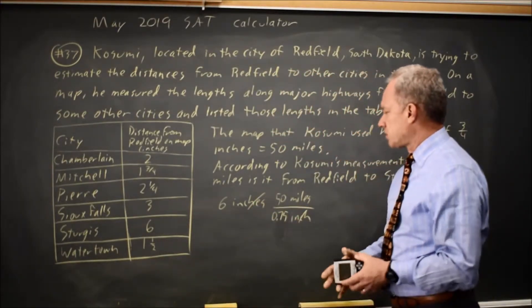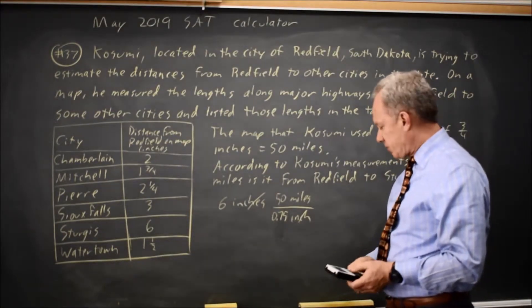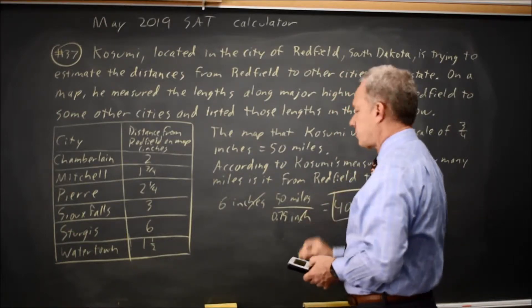And 6 times 50 is 300. 300 divided by 0.75 is going to be 400. So the distance is 400 miles.